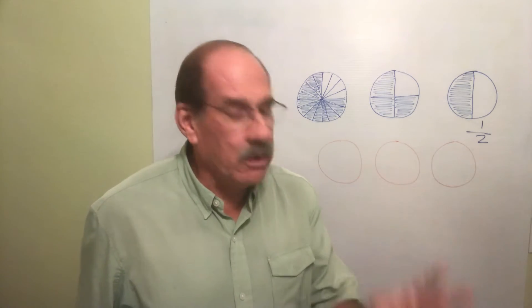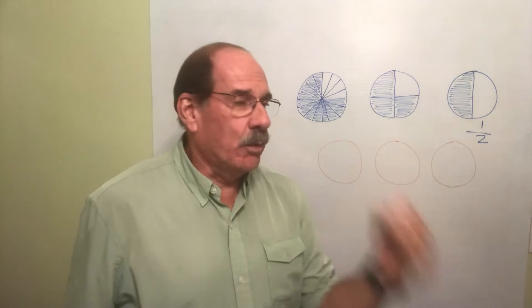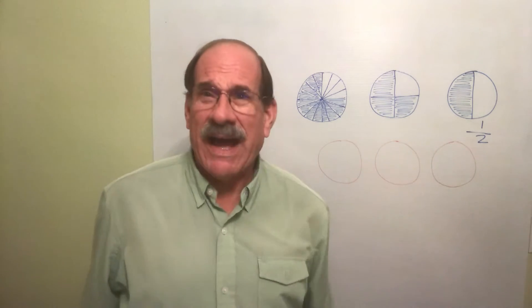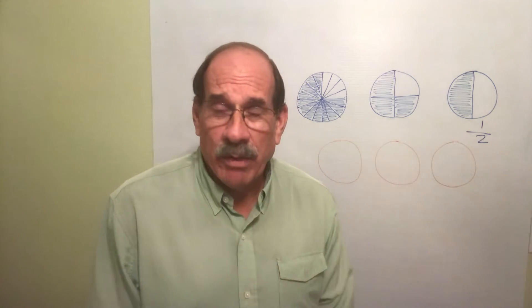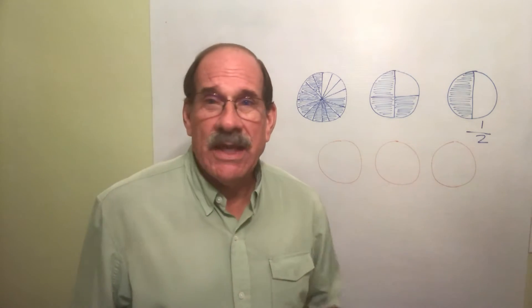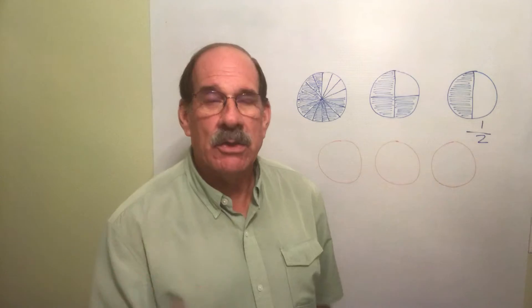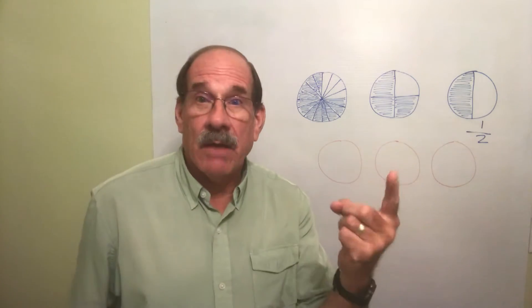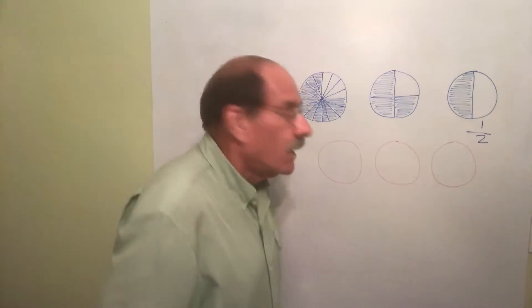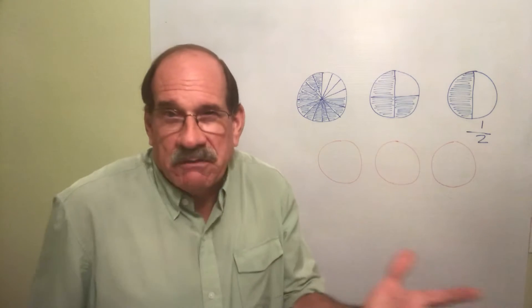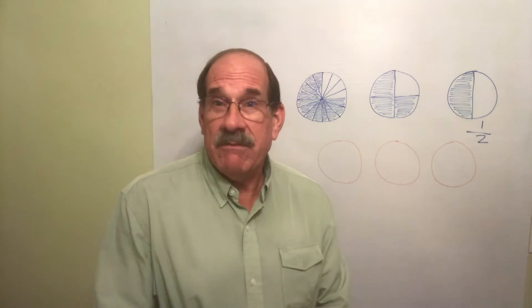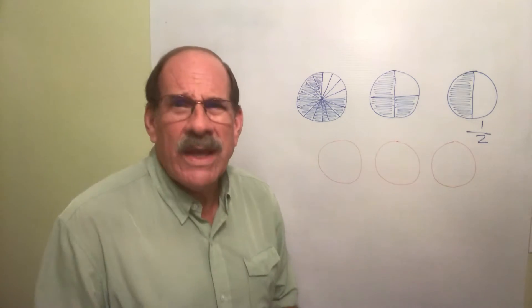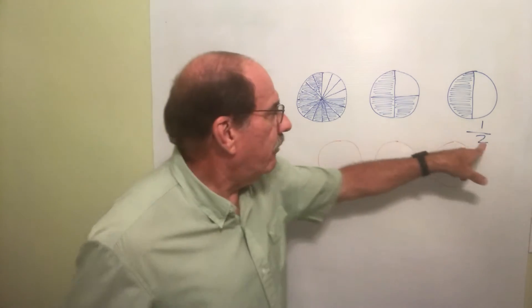The word numerator is four syllables, denominator is five syllables - that takes a lot of time and wasted breath. I'm gonna sometimes say top and bottom. I'm a conservationist - I like to conserve syllables.